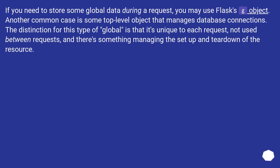If you need to store some global data during a request, you may use Flask's g object. Another common case is some top-level object that manages database connections. The distinction for this type of global is that it's unique to each request, not used between requests, and there's something managing the setup and teardown of the resource.